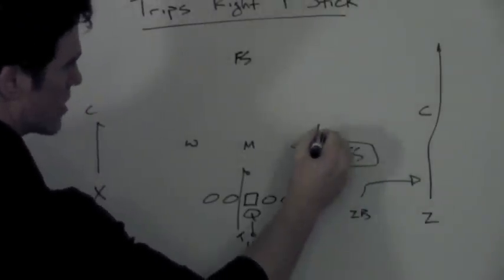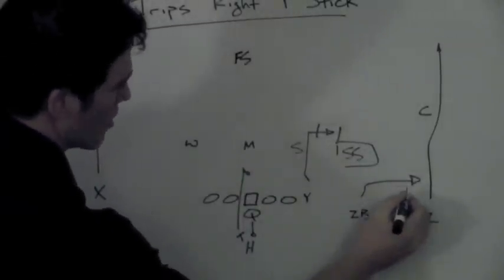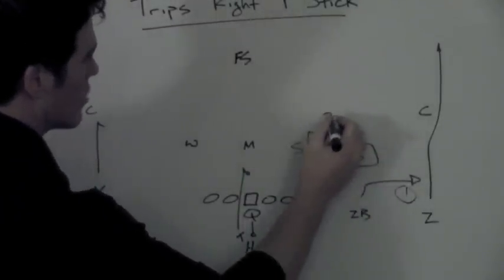If he jumps the arrow route, the stick route should open up right behind him for a very easy completion. If he hangs back and doesn't shoot to the arrow, the quarterback can take the arrow. So his progression is one to the arrow and two to the stick.